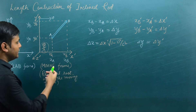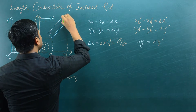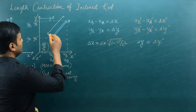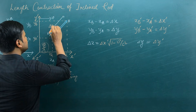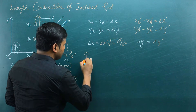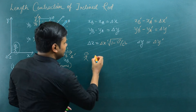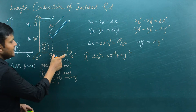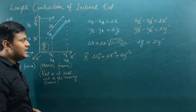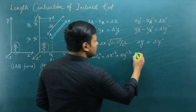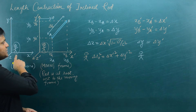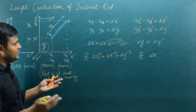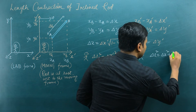Now if I'm interested in calculating the magnitude of the length — so with respect to the observer in the moving frame, the proper length Δl₀ satisfies Δl₀² = Δx dash² + Δy dash². For the observer in the lab frame, if Δl is the length of the object in the lab frame, then Δl² = Δx² + Δy², where Δx, Δy, and Δl are all measurements with respect to the lab frame observer.